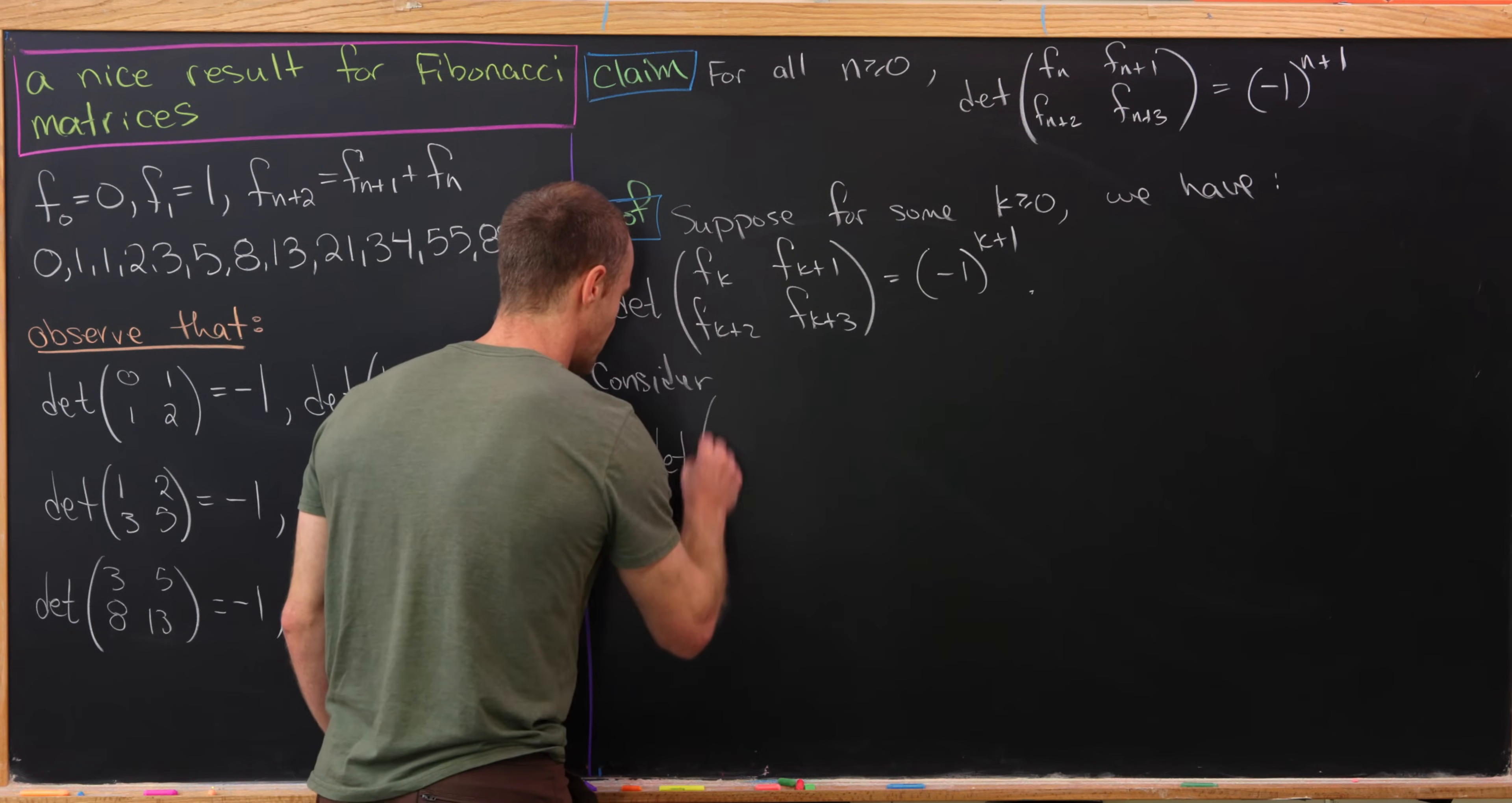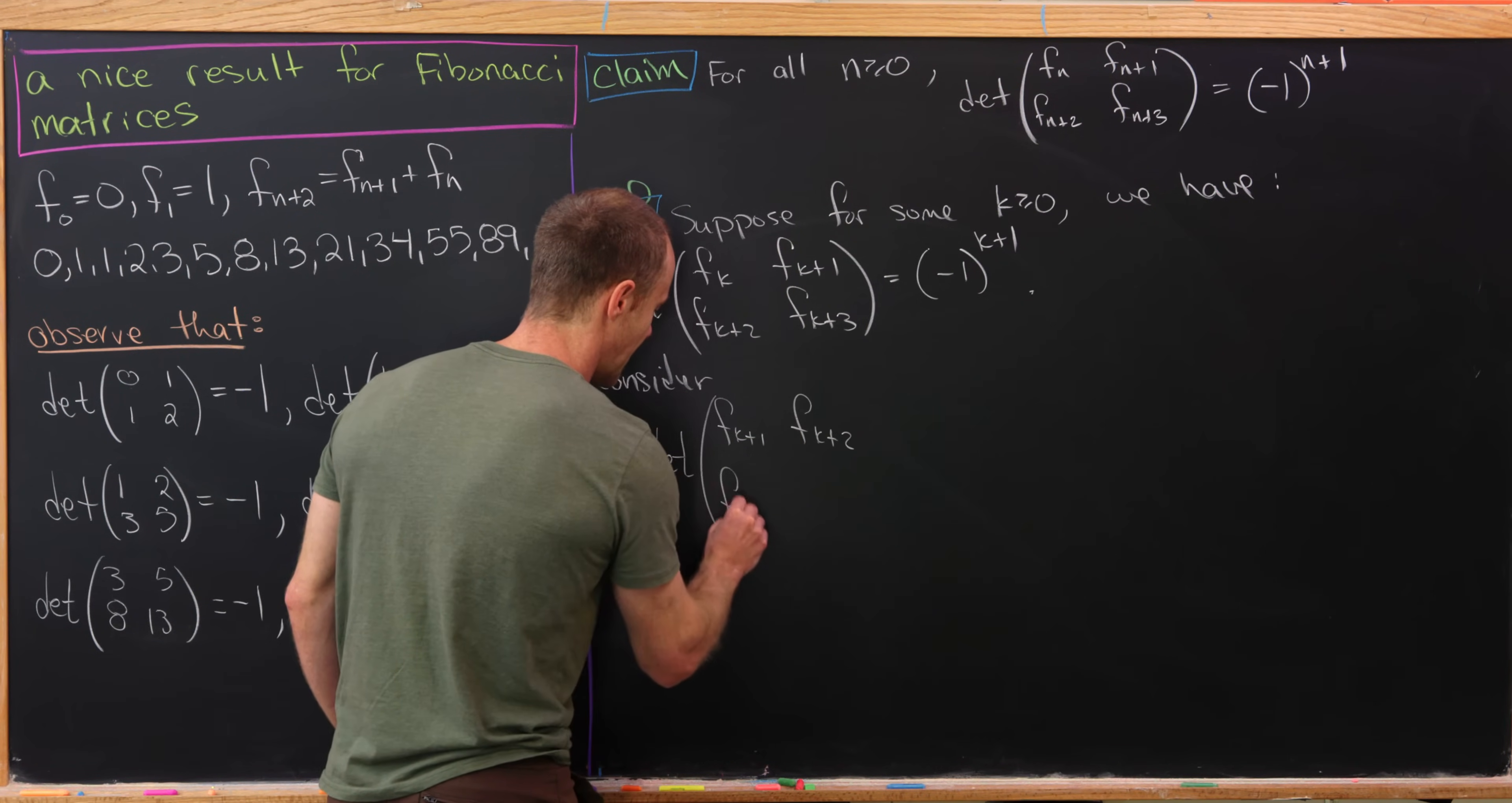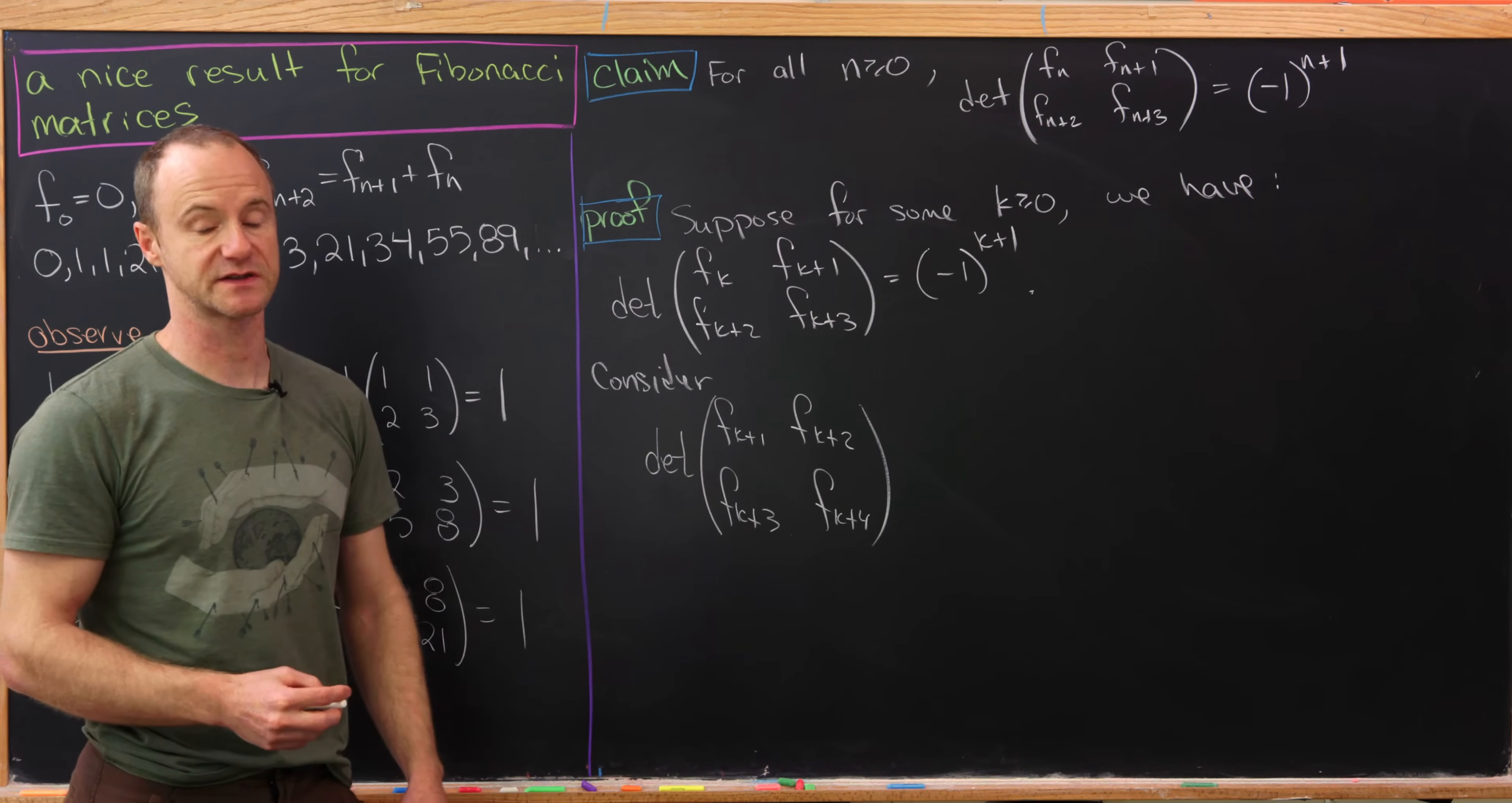Okay, so the next case here will be the determinant of fk+1, fk+2, fk+3, and fk+4. That's what you get if you replace all of the k's up here with k+1.